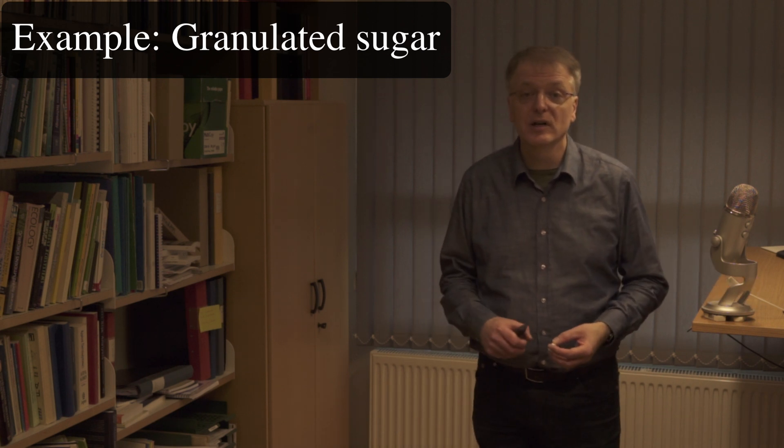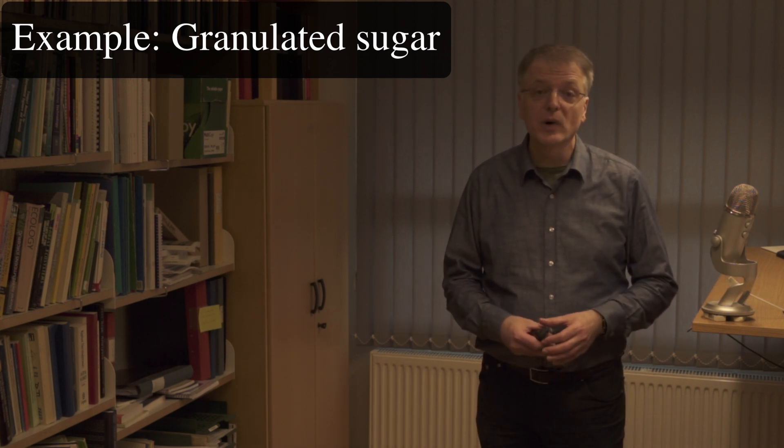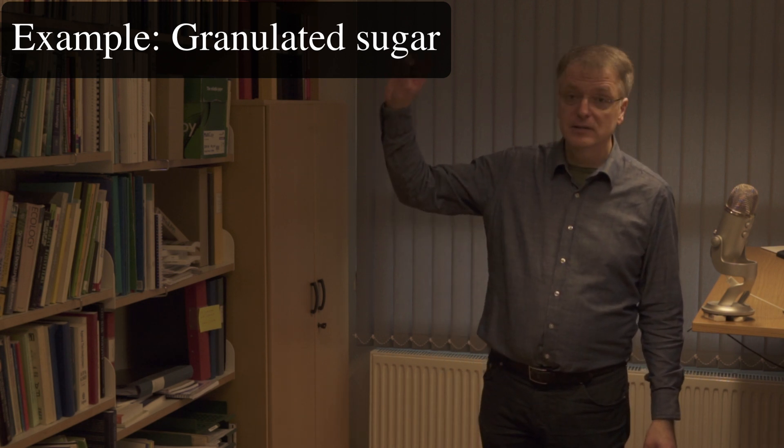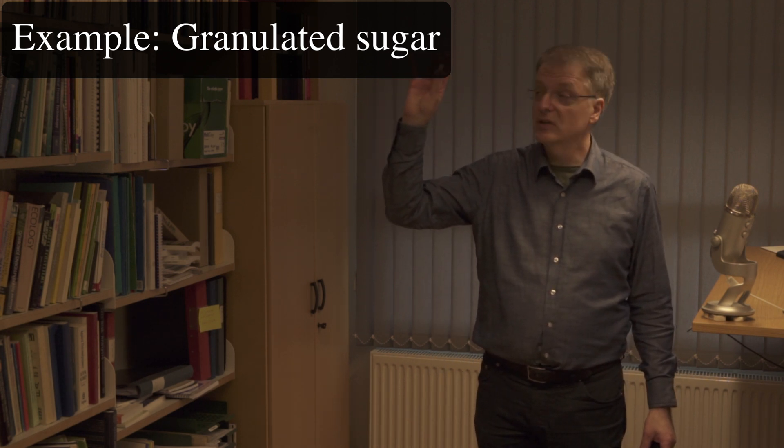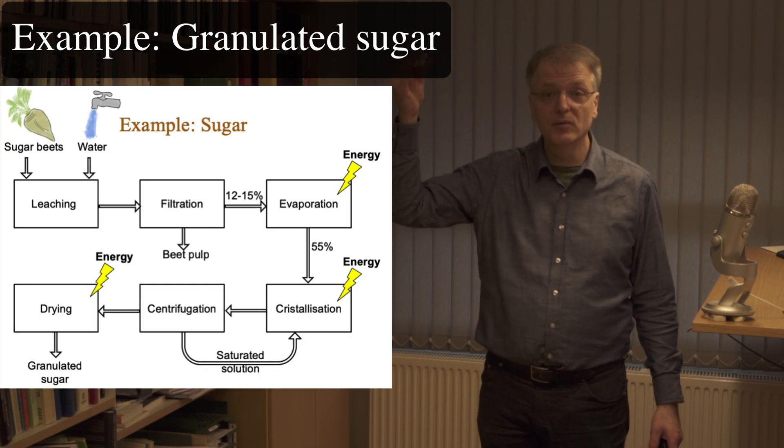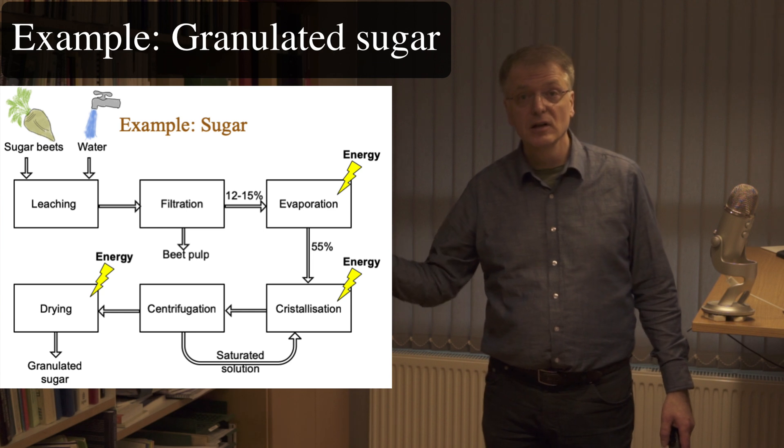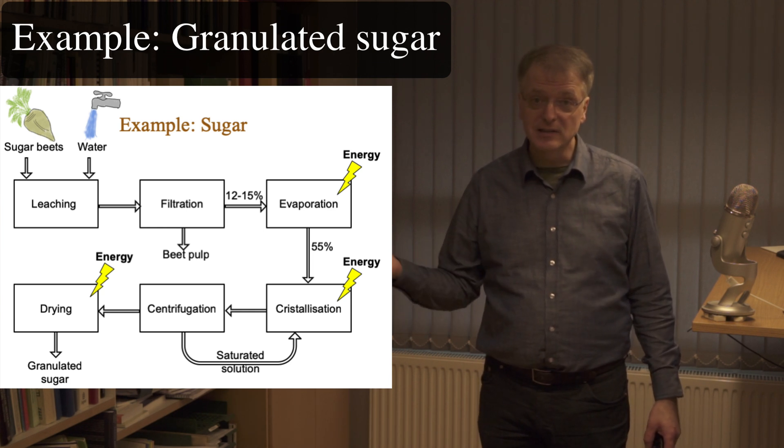Often, when solving a real-life separation problem, it's not enough to use just one separation method. Rather, a whole range of separation methods are needed. As, for example, when you produce granulated sugar and sugar cubes from sugar beets, the beets first need to be washed, taking the soil and dirt away, and then sliced.